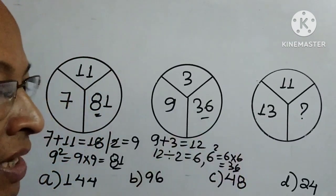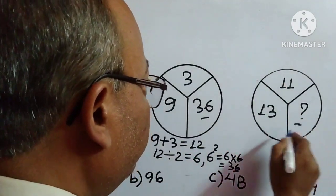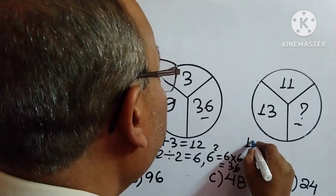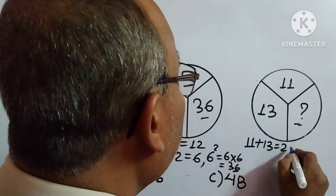So we have to follow the same technique over here in order to get the result. So 11 plus 13 is 24.